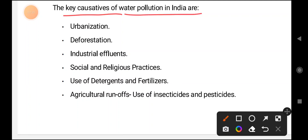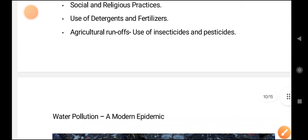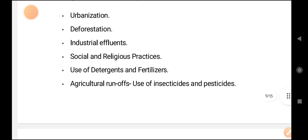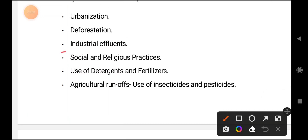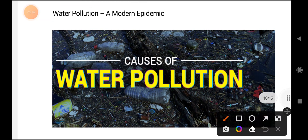The causes of water pollution in India include: urbanization, deforestation, industrial effluence, social and religious practices, use of detergents and fertilizers, agricultural runoffs, and use of insecticides and pesticides in agriculture. Majorly, it is because of industrial effluence.